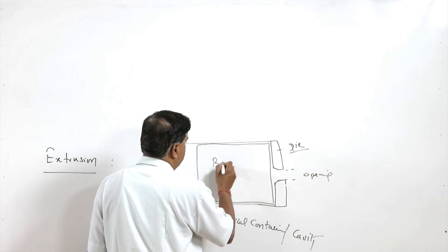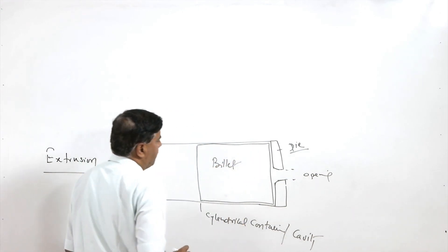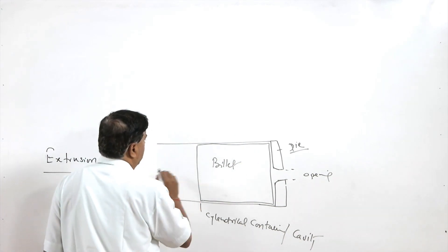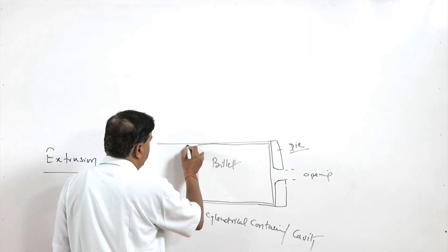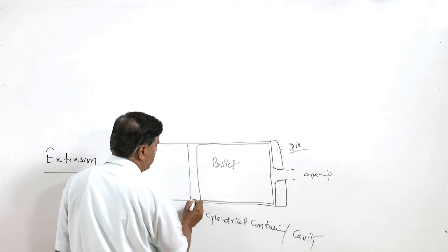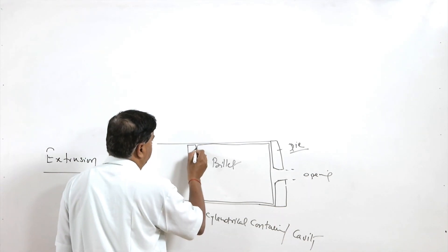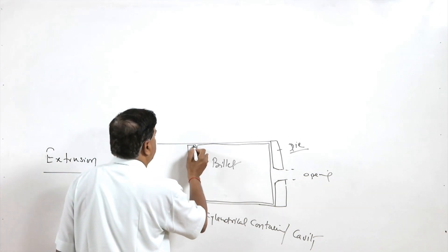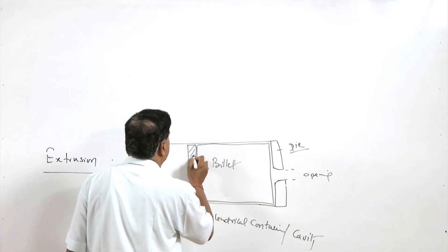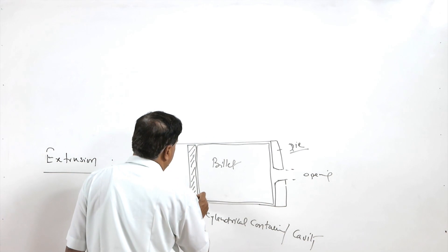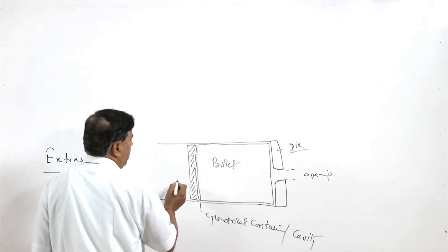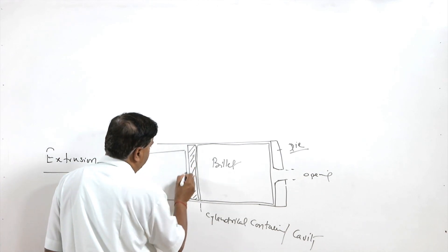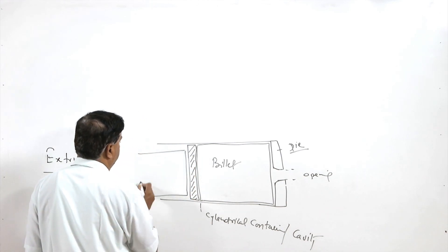This is the billet, and against this billet one dummy block is placed which is normally of steel, 20 to 40 mm thickness, and then against this dummy block force is applied with the help of a ram.